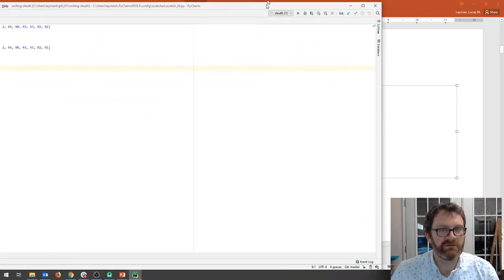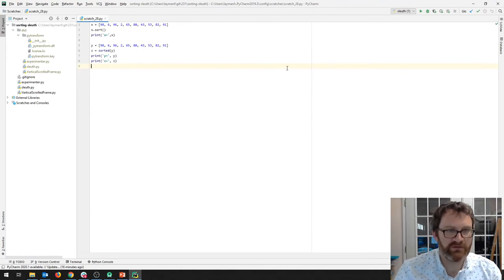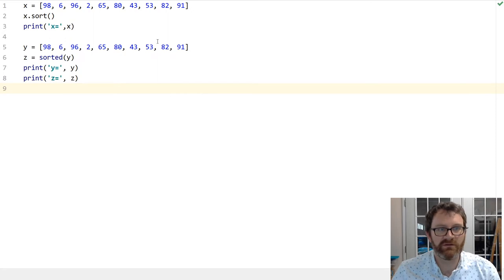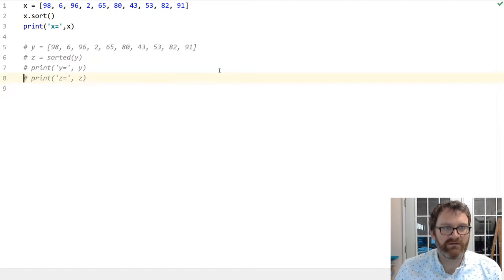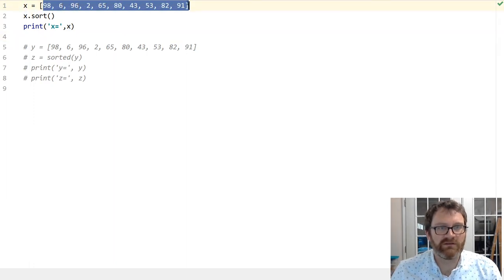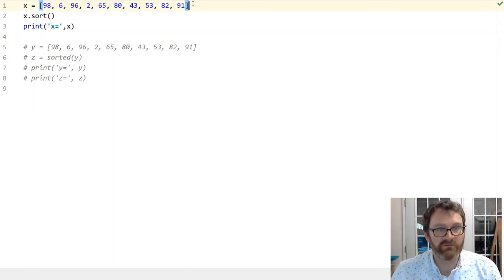All right, so I'm going to grab this code, come over here to PyCharm. You can see I already have it pasted in here. Let's make this a little bigger so you all can see it. So there are two sorting algorithms, not algorithms, sorting implementations, baked into PyCharm. The first is we've got a list. And if you look at this list, it is not in any sort of order. And then we call x dot sort.